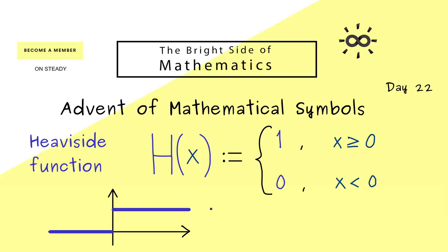Now you know the Heaviside function, which is by the way not called Heaviside because there is a heavy side in the graph. It's called Heaviside as in the mathematician Oliver Heaviside.